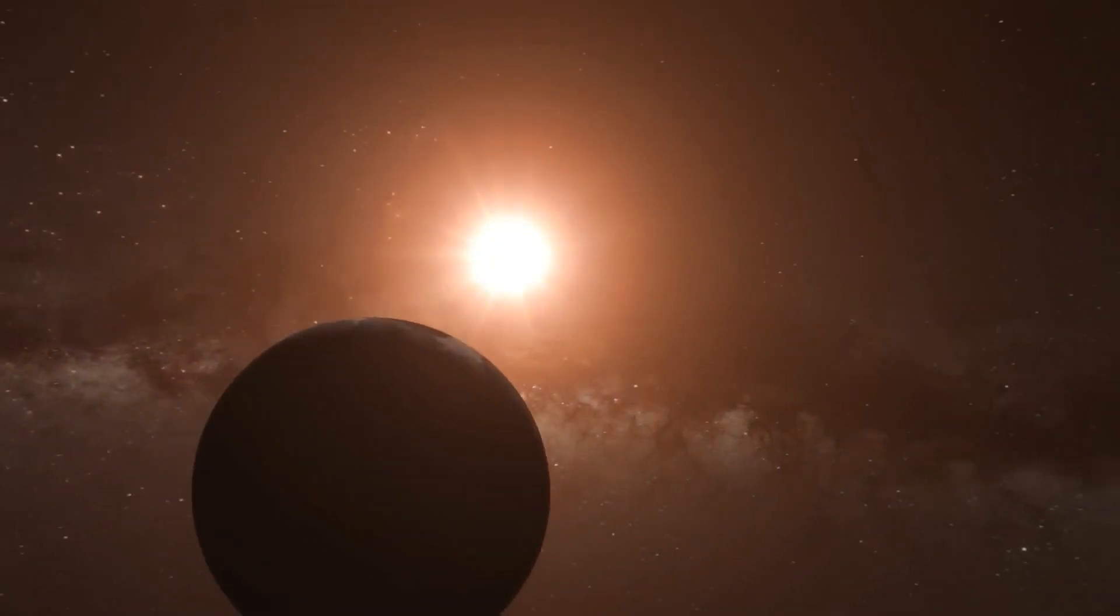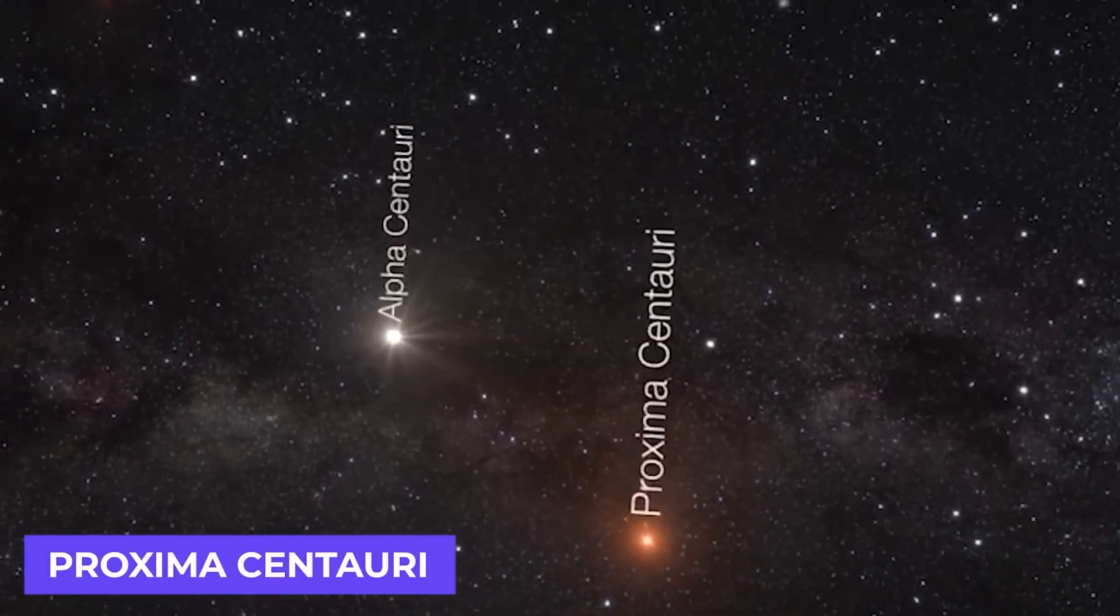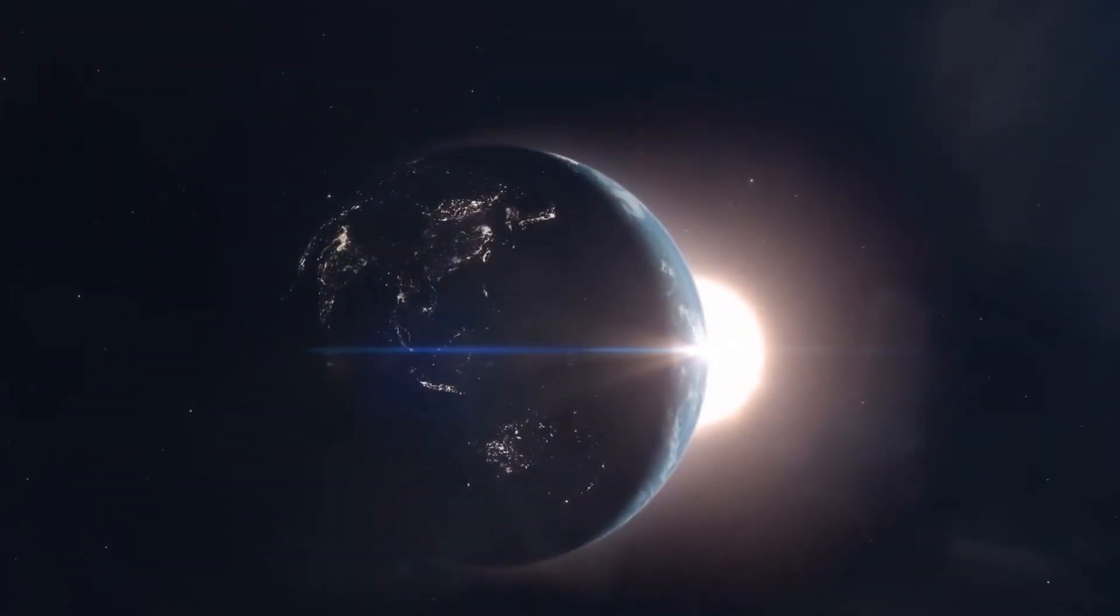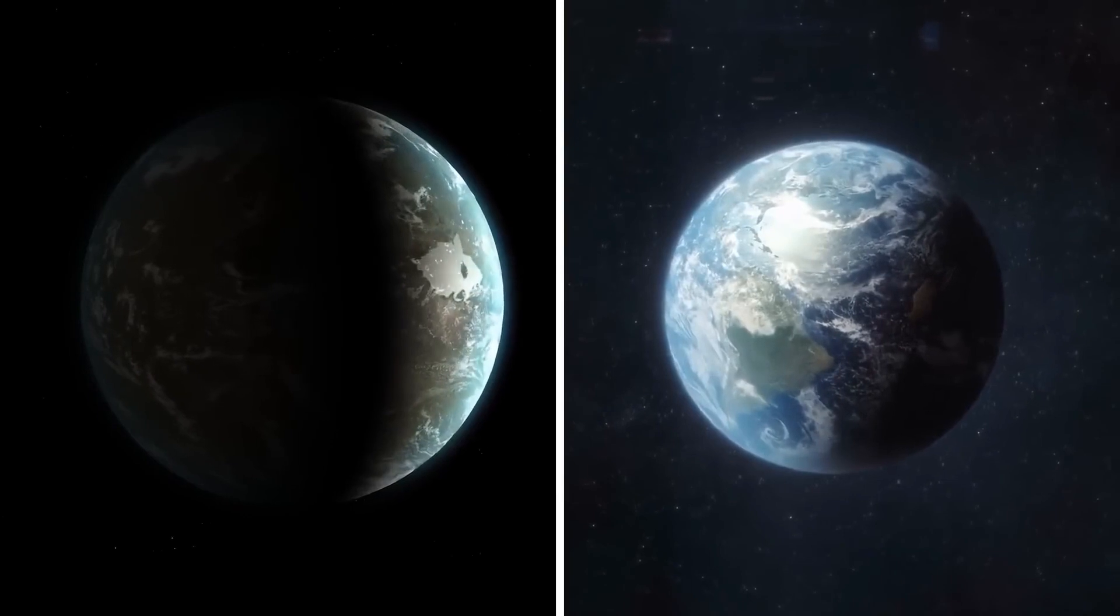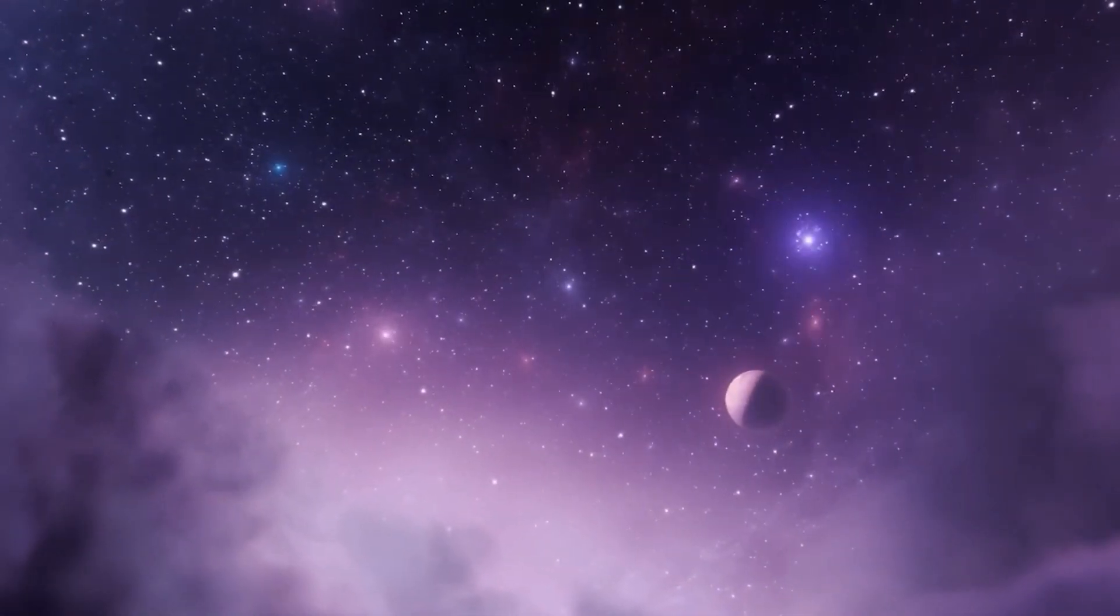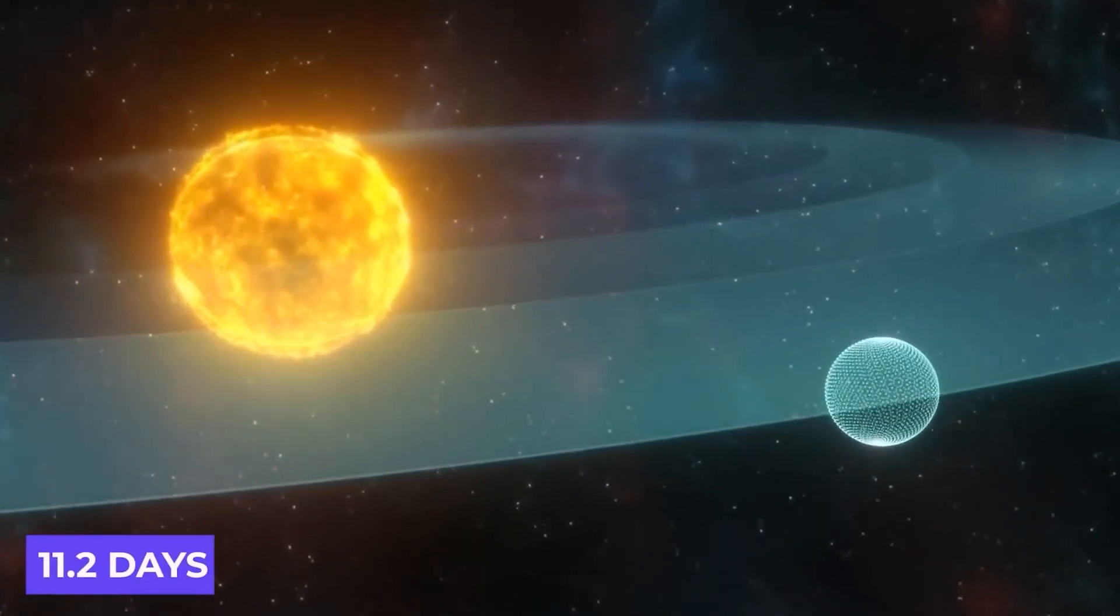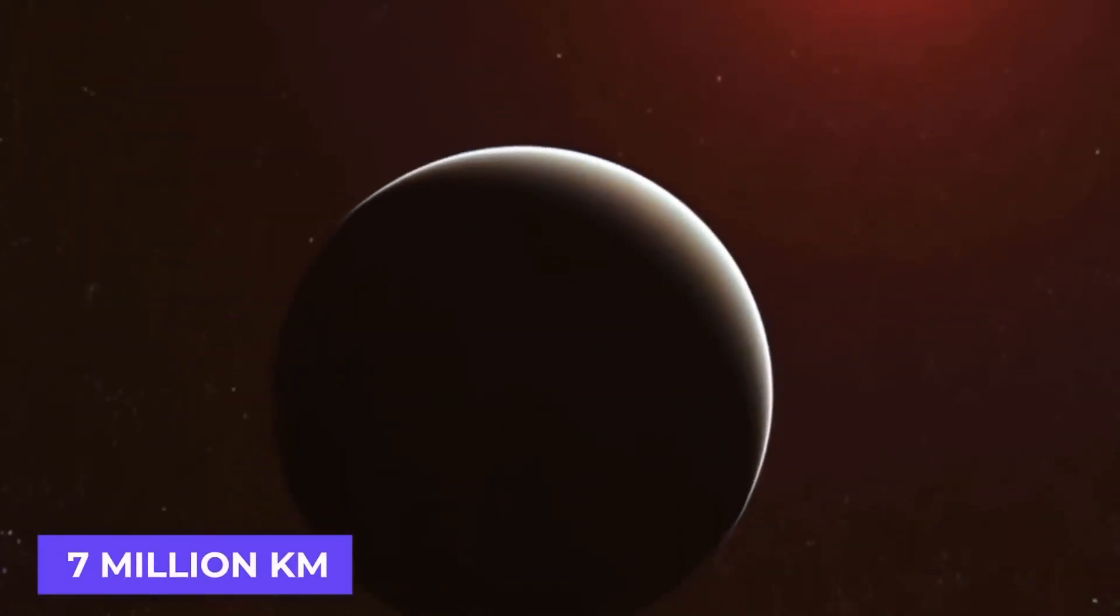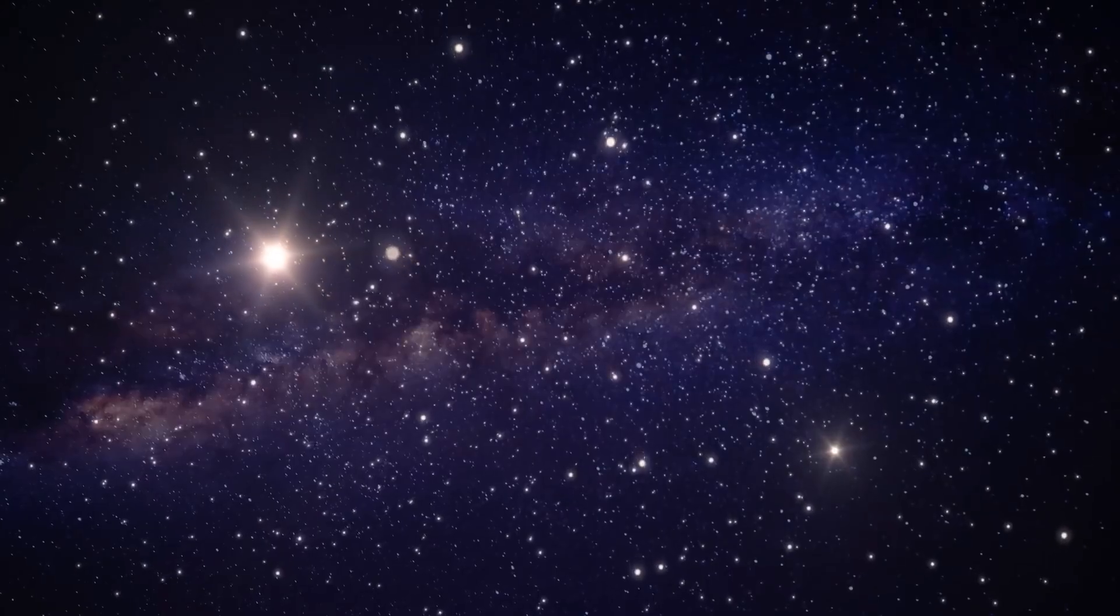Proxima b is a rocky world right in the habitable zone of the M-class red dwarf star, Proxima Centauri, that's just a mere 12% of the mass of our sun. Proxima b, on the other hand, is more massive than our planet, at about 1.6 Earth masses and 1.3 times our radius. It orbits Proxima Centauri in just 11.2 days, covering the distance of just 7 million kilometers. That's less than 5% of the distance at which Earth orbits the sun.